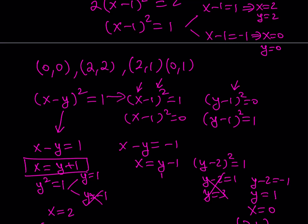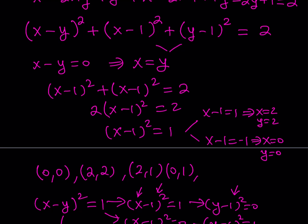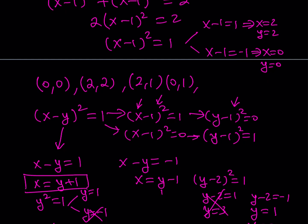By symmetry and going through the remaining cases, we also get the solutions 1 comma 0 and 1 comma 2. The highest value for x or y can be 2, because if x or y is greater than 2, then x minus 1 or y minus 1 is greater than 1, making that squared term exceed 1 and breaking our constraint. So in total, this equation has exactly 6 integer solutions: 0 comma 0, 2 comma 2, 2 comma 1, 0 comma 1, 1 comma 0, and 1 comma 2.